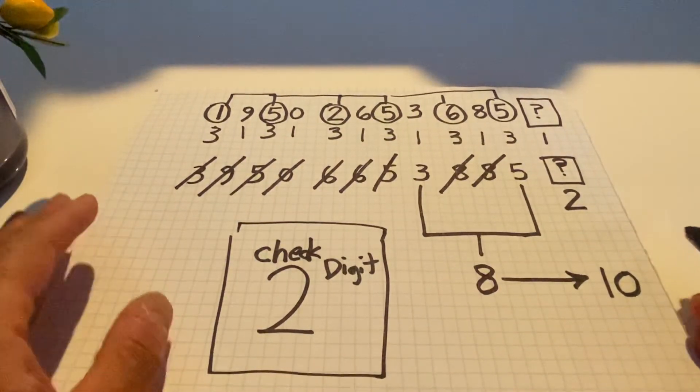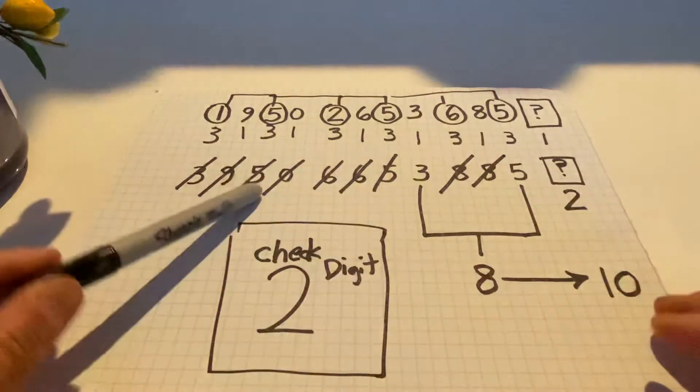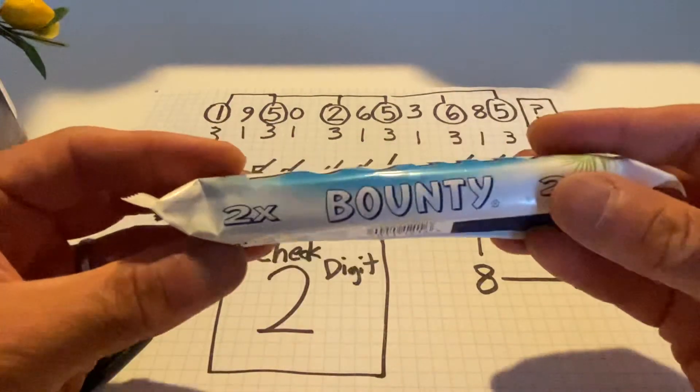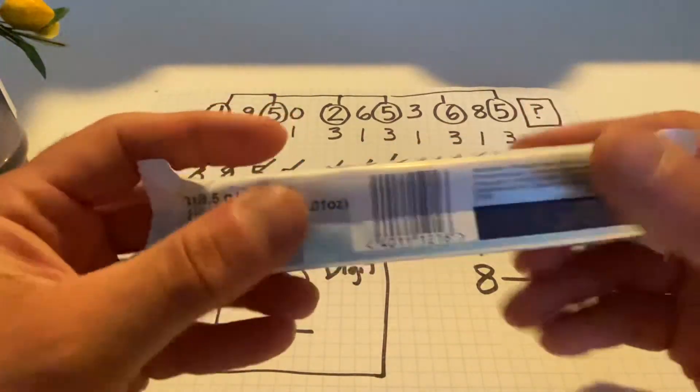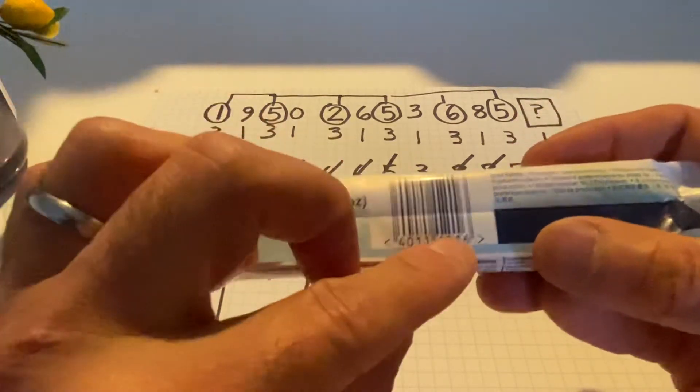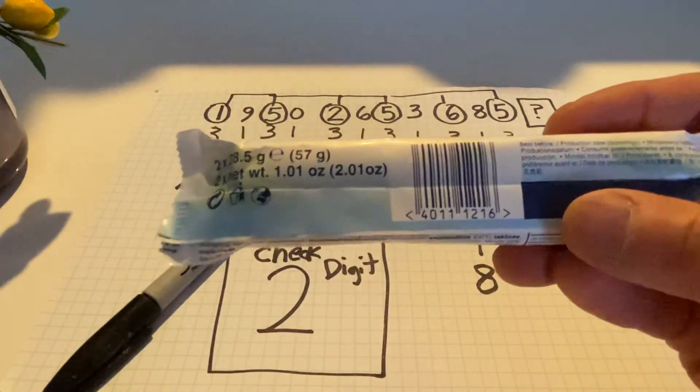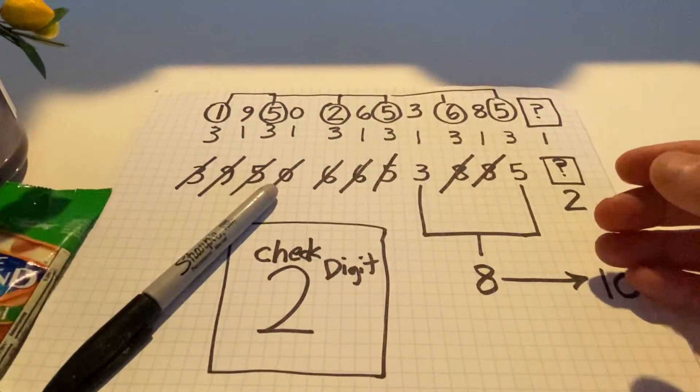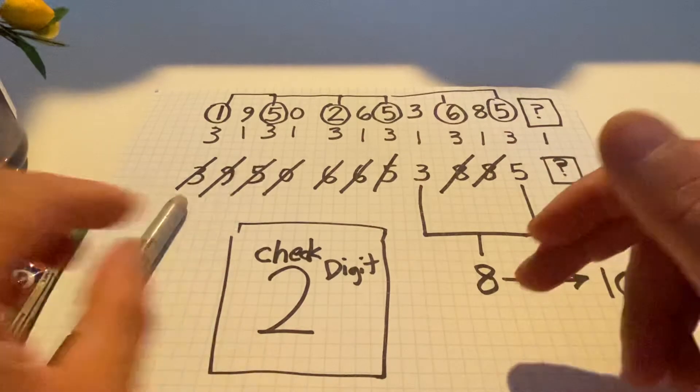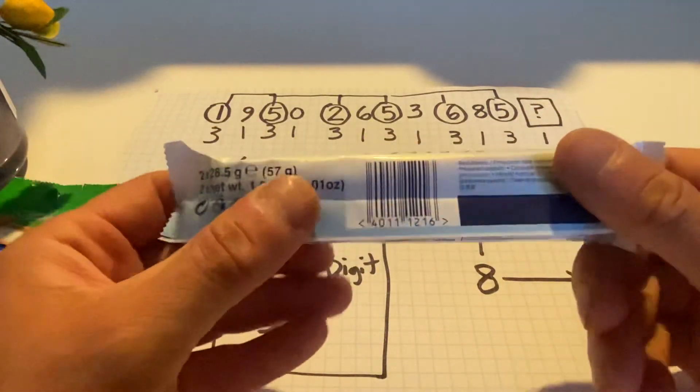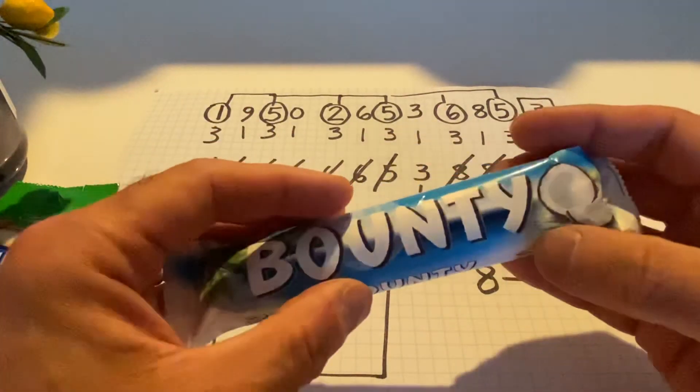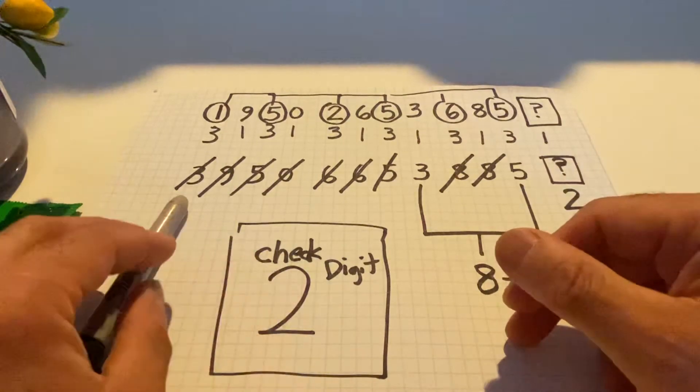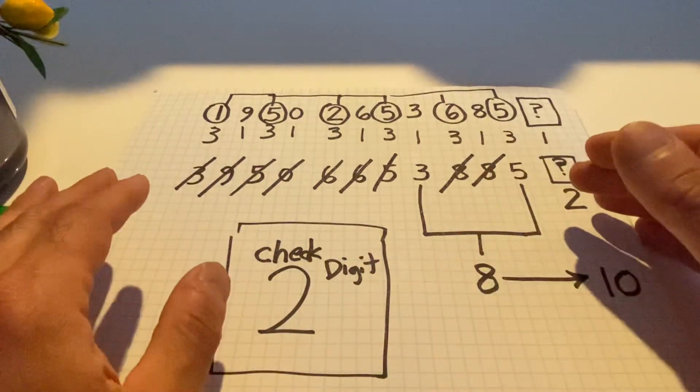I start with, as young as sixth graders can do this, seventh graders, eighth graders, definitely. And then it's a memorable connection to math where they never see a barcode the same way. They never see any object without being inquisitive about the barcode and wanting to calculate the check digit because I got the best students in the world and that's what we do. And it's a lot of fun. This is an example on the 12.